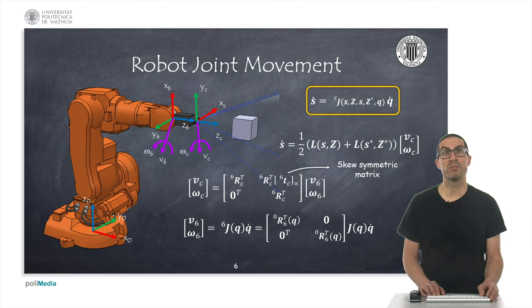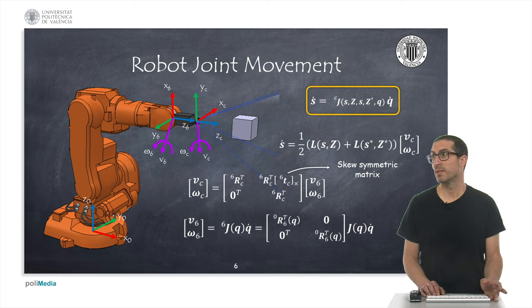To determine the joint movement of the robot, we need to relate the observed velocities of the points in the image plane with the joint robot velocities. We need to compute the Jacobian matrix shown in the formula highlighted in orange. This matrix depends on the coordinates of the points, their depth, the observed and reference points, and the current robot configuration q.